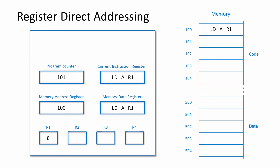If the operand is a processor register, we have what's known as register mode. If the register contains a value, then it's more precisely known as register direct mode. Register direct mode is very fast because there's no need for the processor to access the main memory after the instruction has been fetched. This instruction, which has just been fetched, will load the contents of general purpose register R1 into the accumulator. There's no need to go to memory for this value — it's already available.